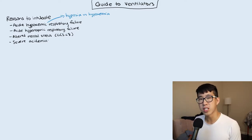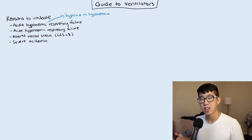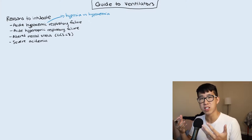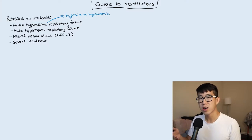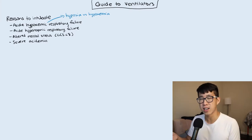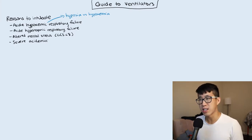Altered mental status is really because you need to protect the airway. If somebody is vomiting a lot or having severe GI bleeding, you want to prevent those secretions from going into their airway and causing them to arrest from a severe aspiration event. Any GCS less than 8 is technically an indication for intubation.